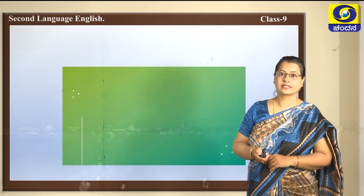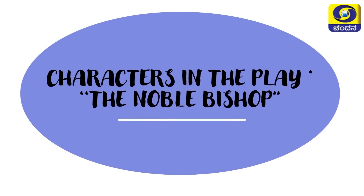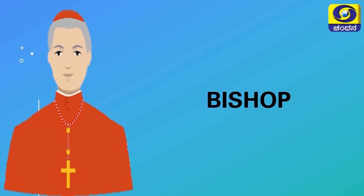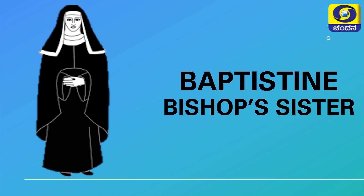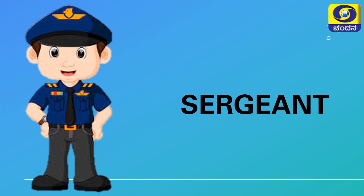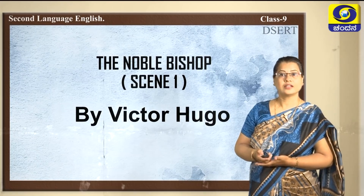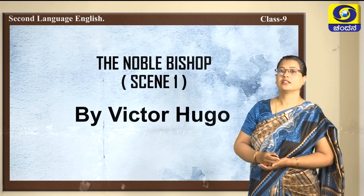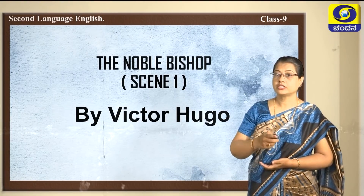Before moving on to the play, let us see the characters. The most important character is Jean Valjean, who is a convict in the play. Next is the Bishop, a most important character. Then there is Baptistine, the bishop's sister. There is also the servant and the sergeant in the play. Now let us see the first scene of 'The Noble Bishop' written by Victor Hugo.